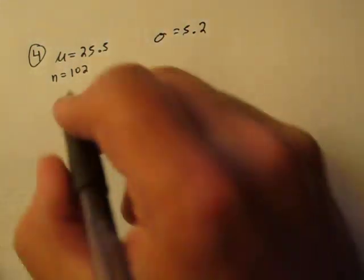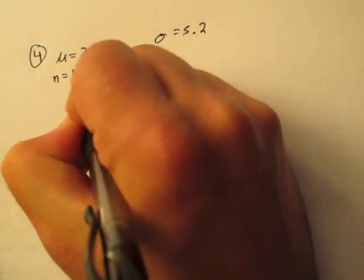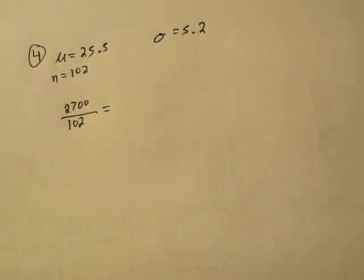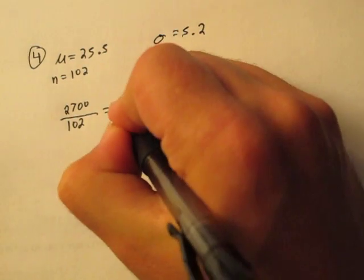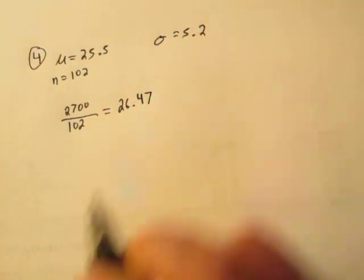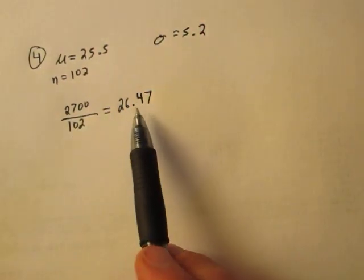Let's look at that. He brought 2,700 M&Ms, and there's 102 teachers. So, if the average number of M&Ms that each teacher eats exceeds 26.47, he's going to run out of M&Ms.